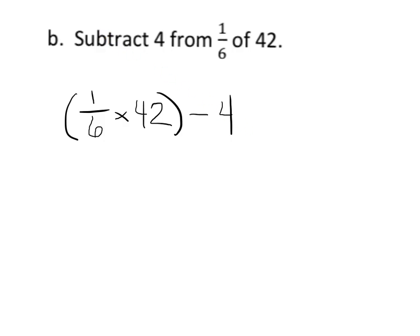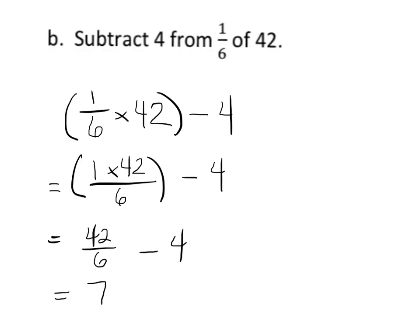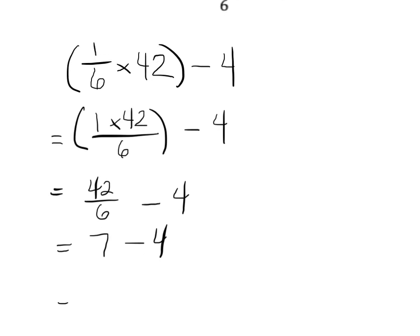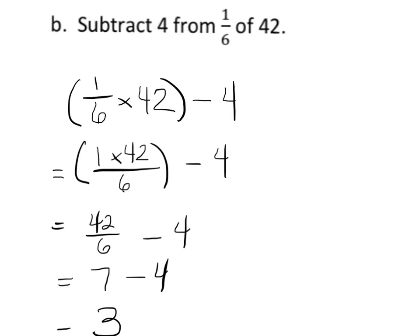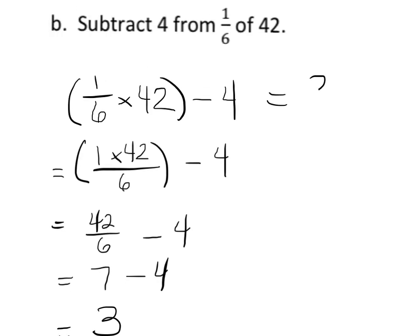And now let's evaluate. So we're going to evaluate. So one-sixth of 42. So that means one-sixth times 42. So that's going to be one times 42 over six minus four. And we can see another way to do this. I think I did it differently last time. So we're going to do it this way. One times 42 is 42 over six minus four. And 42 over six is equal to seven minus four. So that gives us the answer of three. So the answer is three. So I'll put that up here. Equals three.